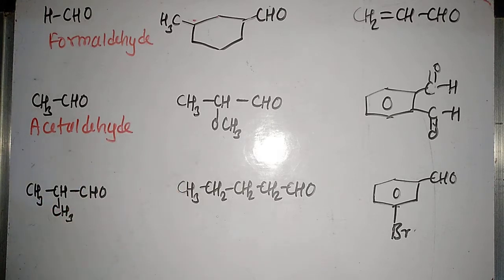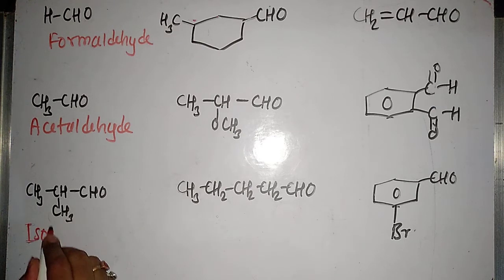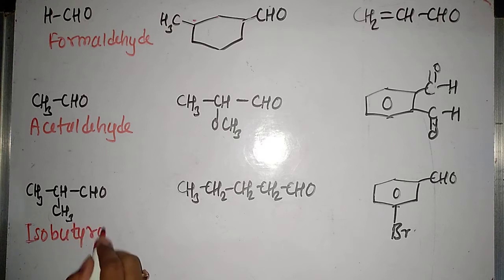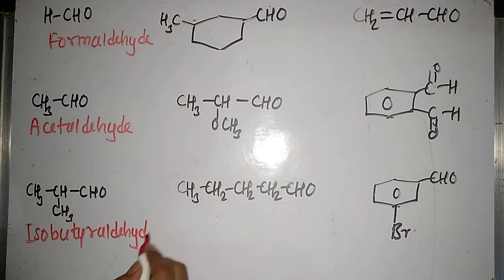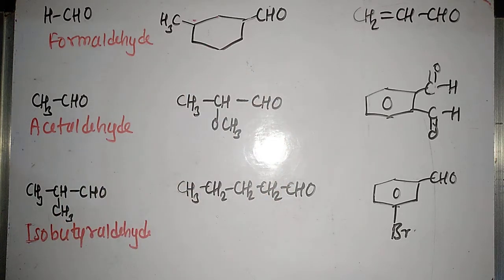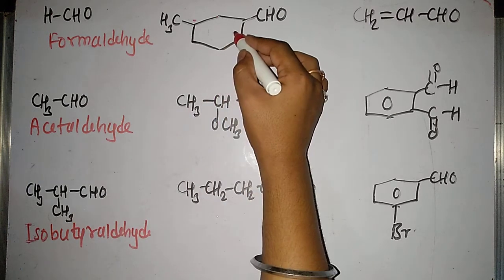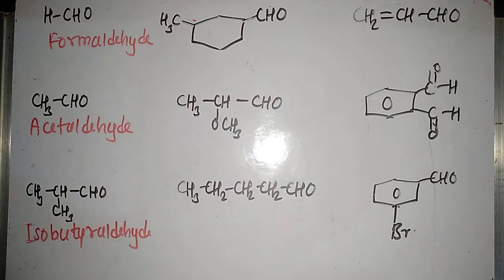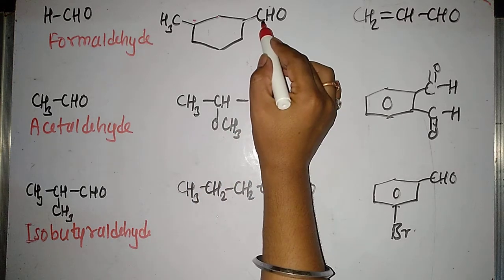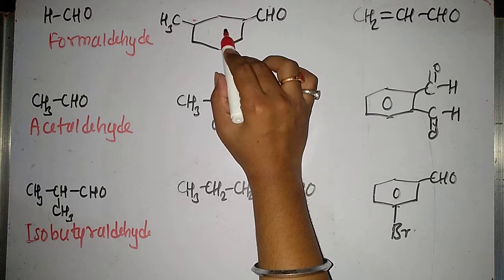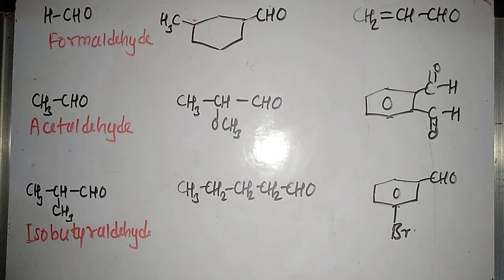Here there are a total of four carbon atoms, so I will call it butyraldehyde. Since we are having a CH₃ group at the second position, then this compound will become isobutyraldehyde. When CH₃ is at the second position, we call it isobutyraldehyde.